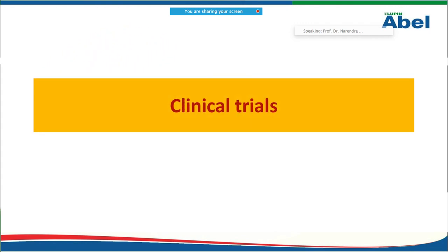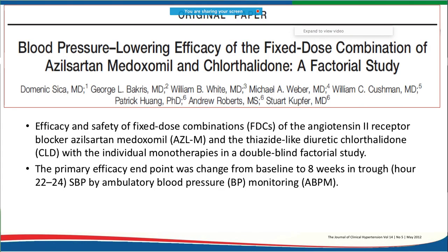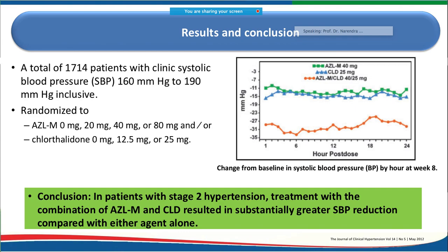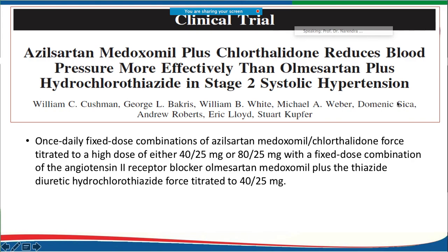Multiple clinical trials support this combination therapy. A study published in the Journal of Clinical Hypertension concluded that for stage 2 hypertension, the combination of azilsartan with chlorthalidone results in substantially greater systolic blood pressure reduction, as shown graphically in the study results.